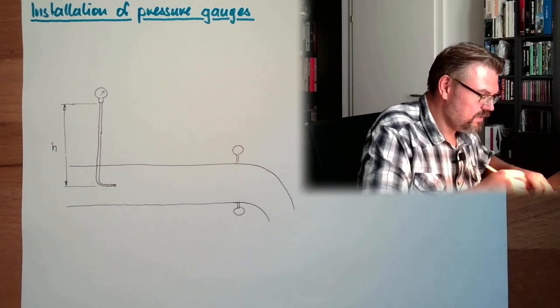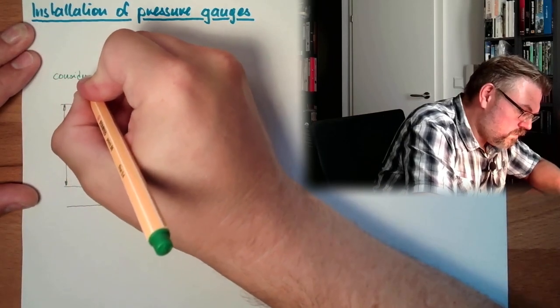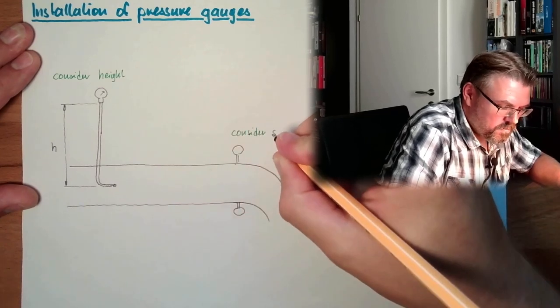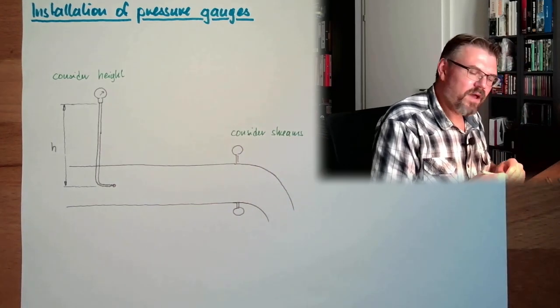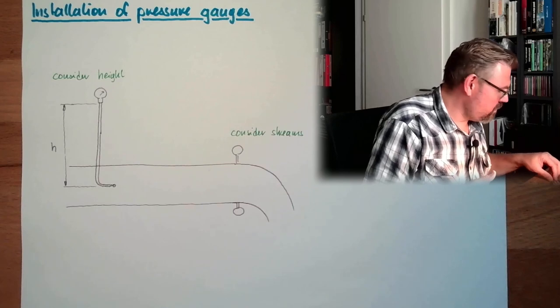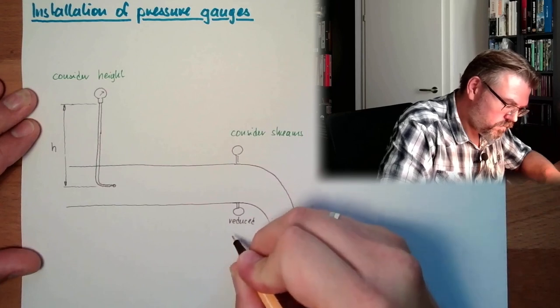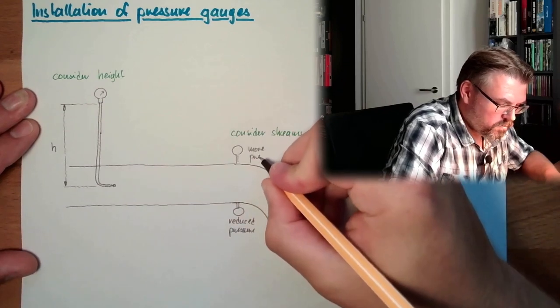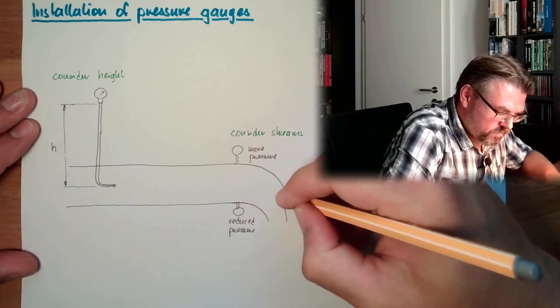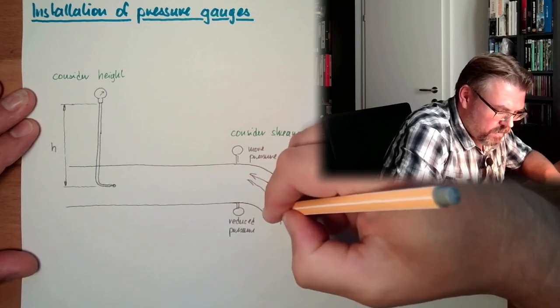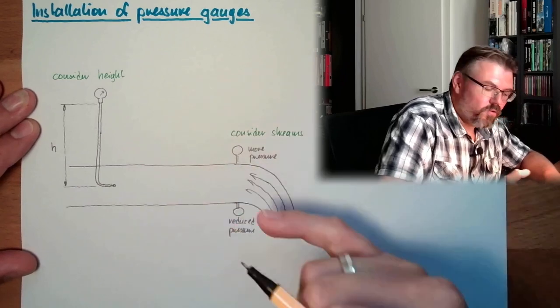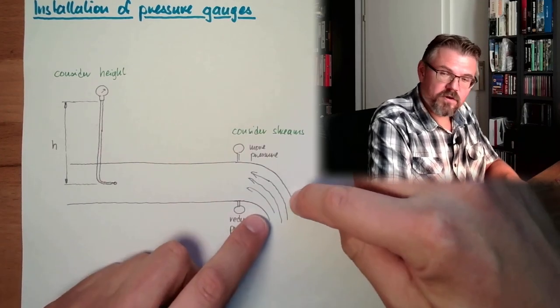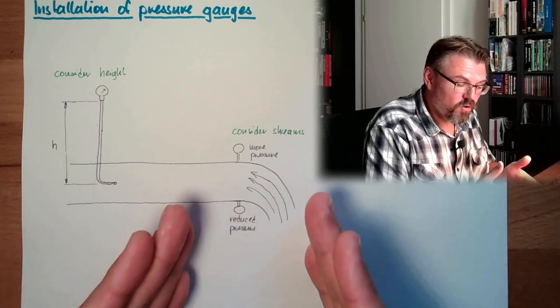Okay, so I have to do, maybe I will note this. I will note this here. Consider height and here we have consider streams. So we have on one side we have here a reduction, reduced pressure. Here we have more pressure, simply because my stream will go up here and it will concentrate the pressure on the upper side or on this side, on the outer side of my bend.